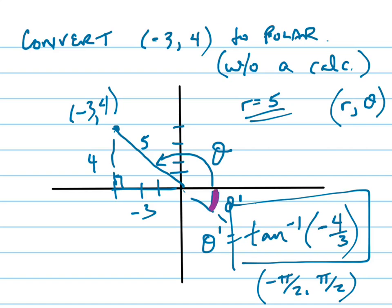that angle right there, is going to be between -π/2 and positive π/2. But I don't want that angle. I want this angle right here. That's the theta that I want, so I have to add what to this? Pi. I have to add one full pi.